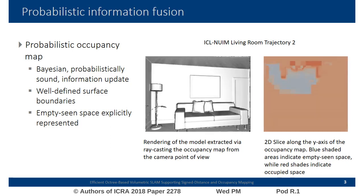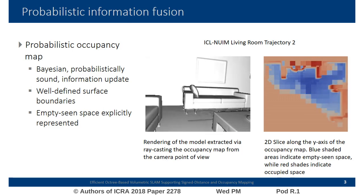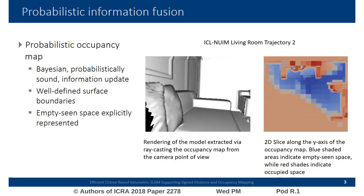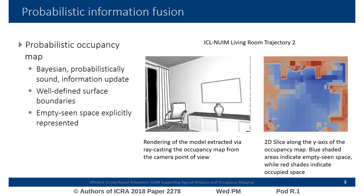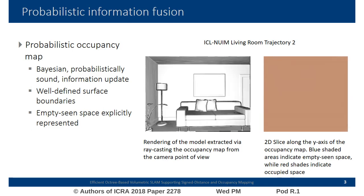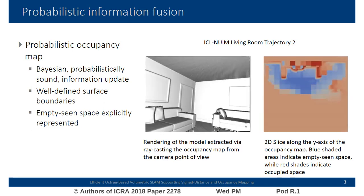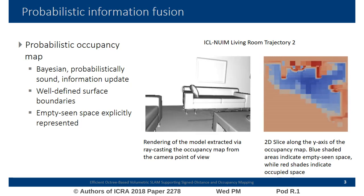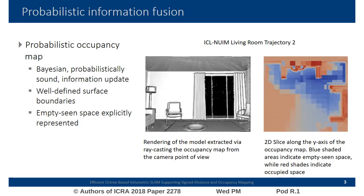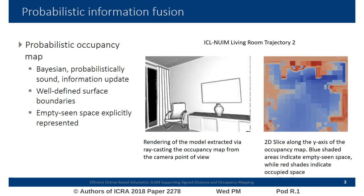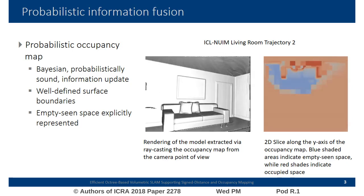In the video, we show a sequence of reconstructed views from the ICL NewAM dataset. On the left-hand side, we can see a view of the model rendered via raycasting from the camera point of view. On the right-hand side is a 2D slice of the mapped environment up to the corresponding frame on the left. We color-coded occupancy probabilities, where blue denotes empty scene space, red indicates occupied space, and salmon denotes unseen space.